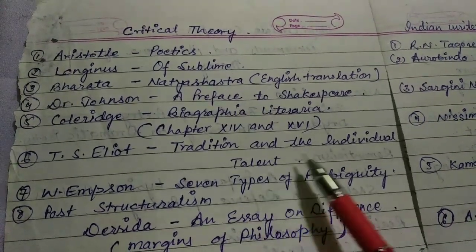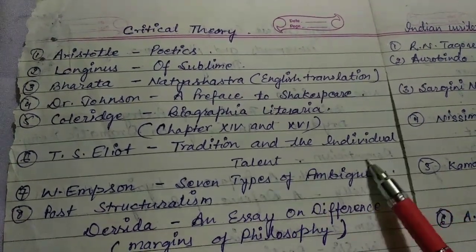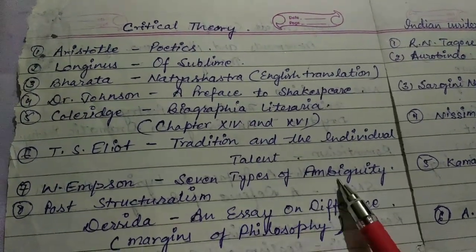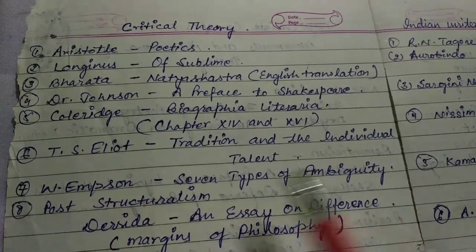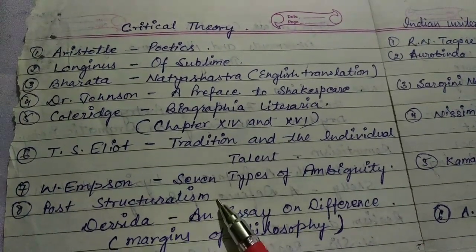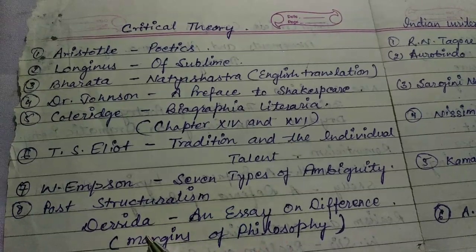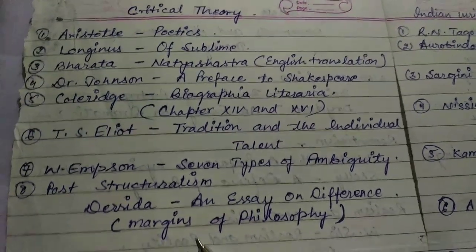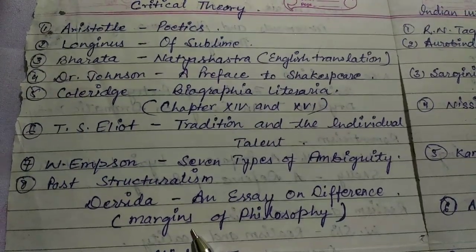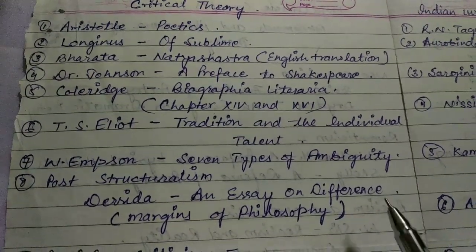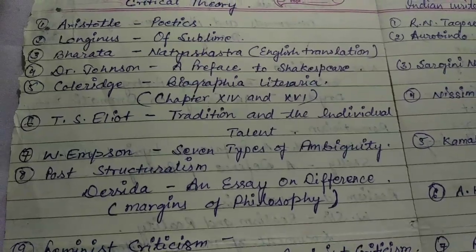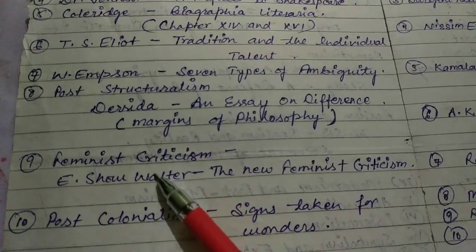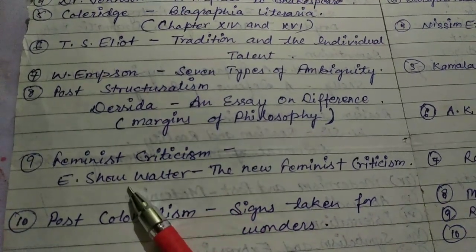T.S. Eliot's Tradition and the Individual Talent, Empson's Seven Types of Ambiguity, and post-structuralism — Derrida's essay On Difference, also known as Margins of Philosophy.